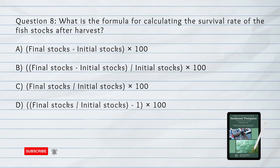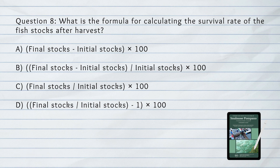Number 8. What is the formula for calculating the survival rate of the fish stocks after harvest? A. Final stocks minus initial stocks times 100. B. Final stocks minus initial stocks, divided by initial stocks, times 100. C. Final stocks divided by initial stocks, times 100. D. Final stocks divided by initial stocks, minus 1, times 100. Answer: B.